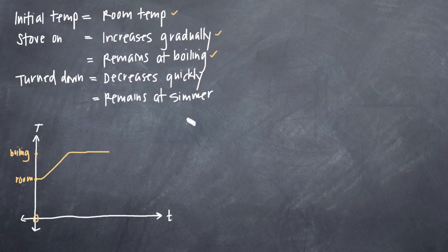At some point the stove gets turned down, at which point the temperature decreases quickly and remains at a simmer. Well, a simmer would be slightly above room temperature. So we can show decreasing quickly and then remaining at a simmer. So we can plateau at a simmer here. And the temperature remains at a simmer until the water is dumped out. So we'll call this temperature here a simmer.